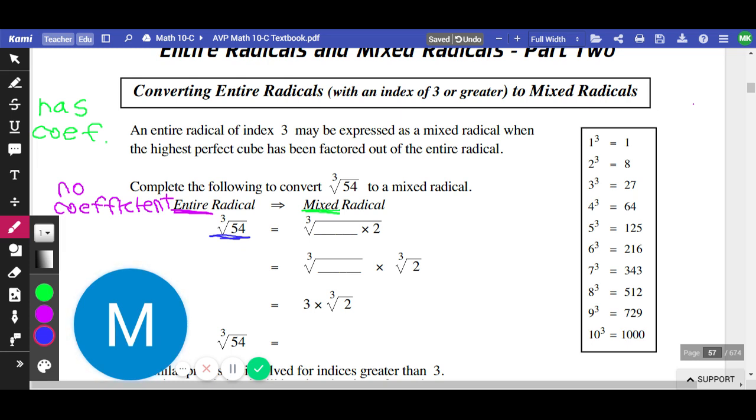Last time we simplified radicals, we created something called a perfect square chart. That means we went 1 to the power of 2, 2 to the power of 2, 3 to the power of 2, and we made that little chart on the right-hand side of our page. That's because before today, it was always a square root, meaning index 2. If this is an index 3, what kind of chart do you think we're going to need to use? A power of 3 chart. This is a power of 3 chart. All the numbers, the first 10 numbers, when you cube them. So 1 cubed equals 1, 2 cubed equals 8, 3 cubed equals 27, so on and so forth.